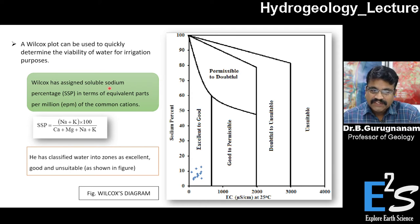Wilcox has assigned the soluble sodium percentage SSP in terms of PPM, equivalent parts per million of the common cations. He has assigned SSP percentage by taking the values of PPM of sodium plus potassium into 100 over calcium plus magnesium plus sodium plus potassium.